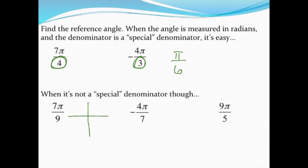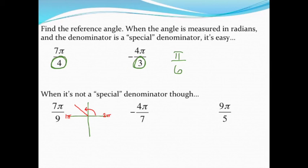Your reference angle is always the angle formed between the x-axis and wherever the angle ends up. So 7π/9 is going to be somewhere in quadrant two. I know that because this over here is one pi, and a full revolution is two pi. So really all I'm trying to do is get to one pi or two pi — you can think of it as: what do you need to add to the fraction to complete it or make it a full whole number?